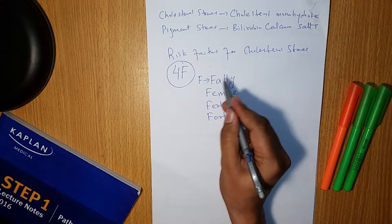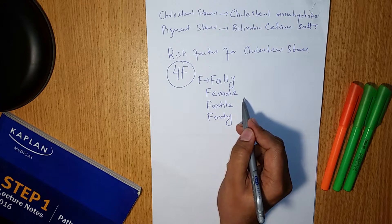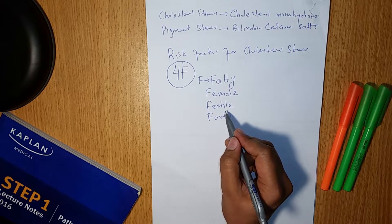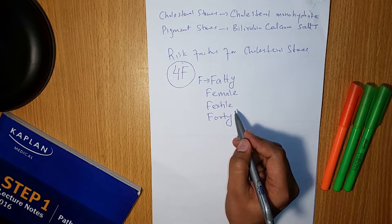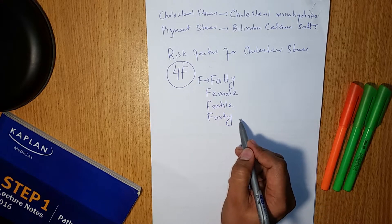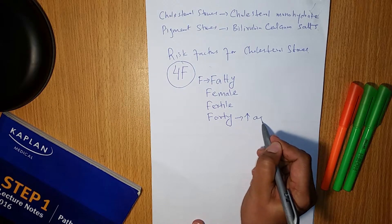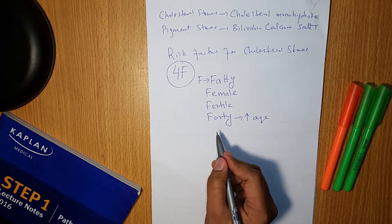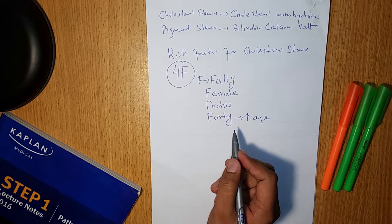Fatty refers to obesity. Cholesterol stones are more common in the female gender, and also in fertile age — related to female sex hormones, oral contraceptive pills, and pregnancy. Faulty refers to increased age, where there is greater risk of cholesterol stones.